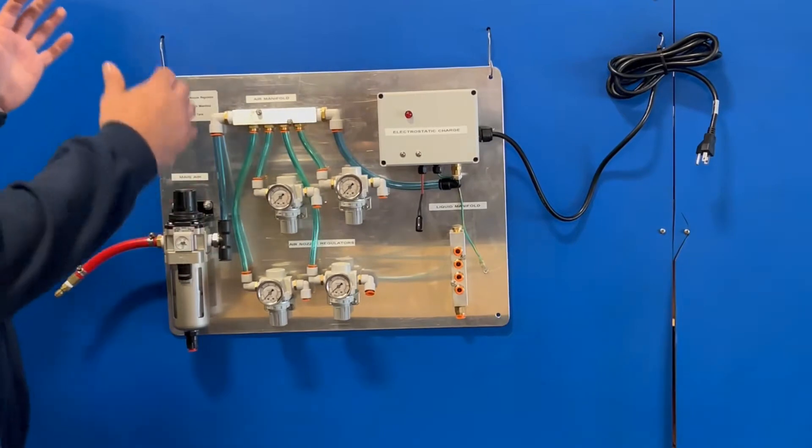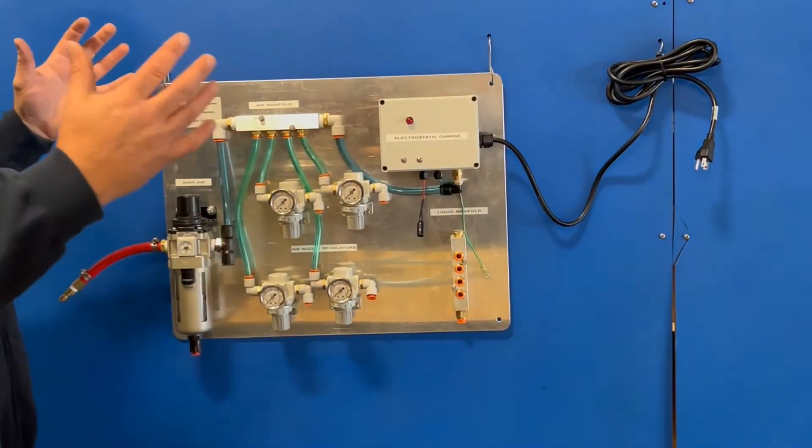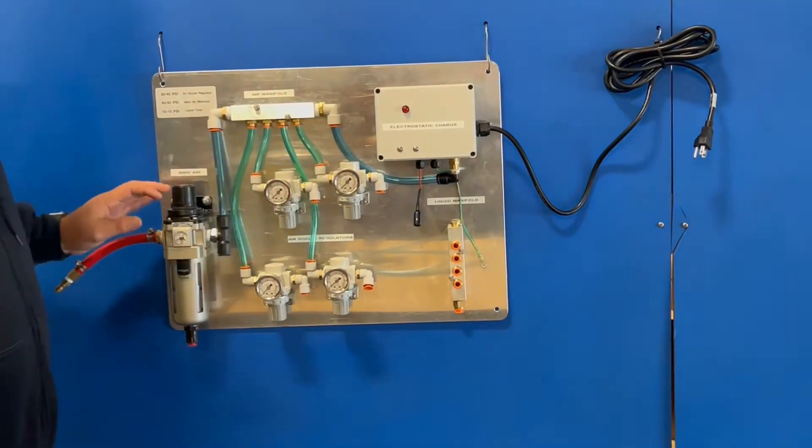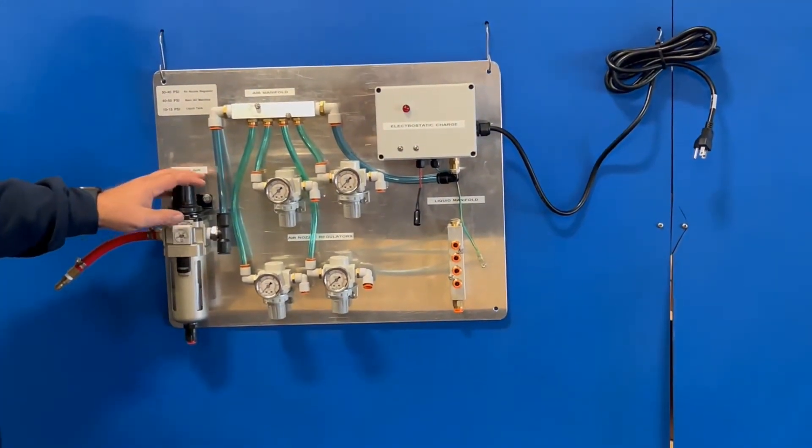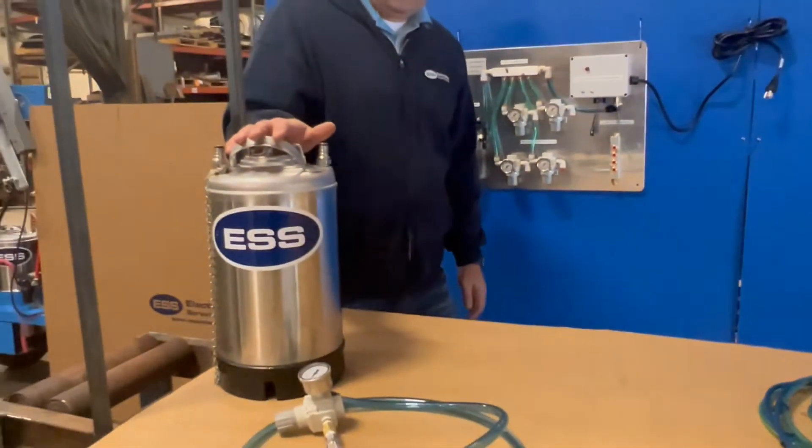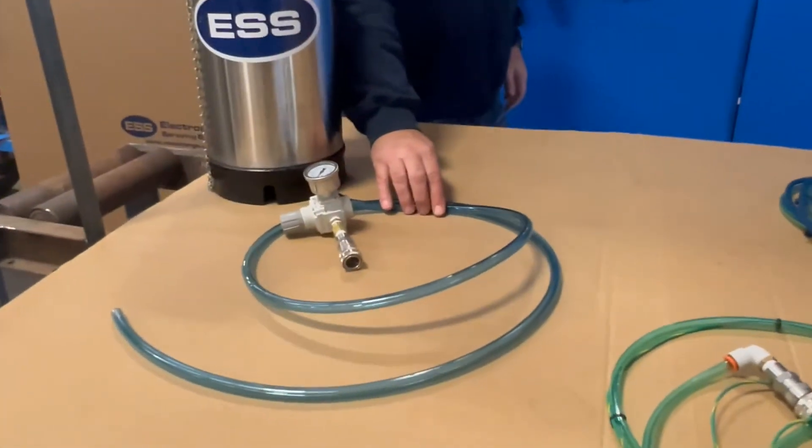This will be all set up like this, and that's how it will come out of the box. Now we'll show you how we're going to set up the tank, the air pressure hose for the tank, and how you can get pressure inside the tank.